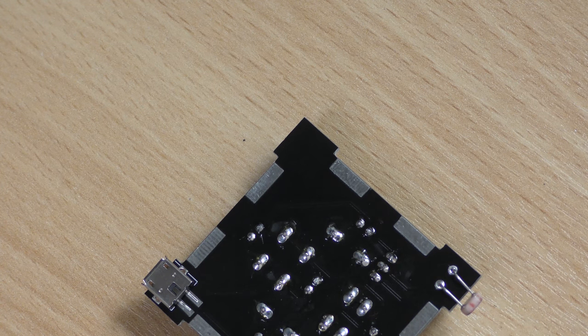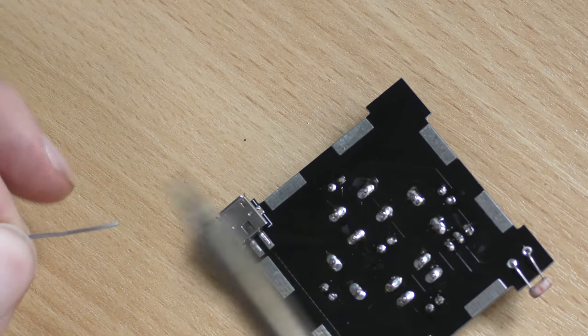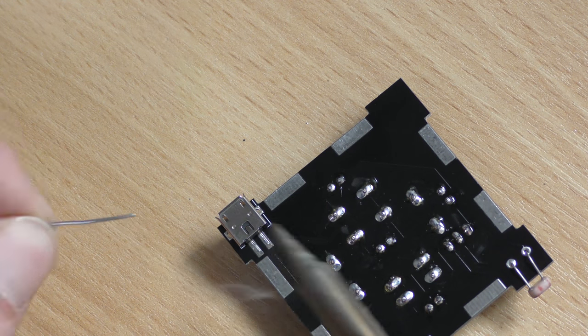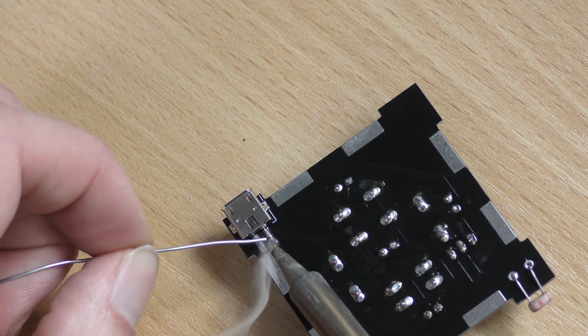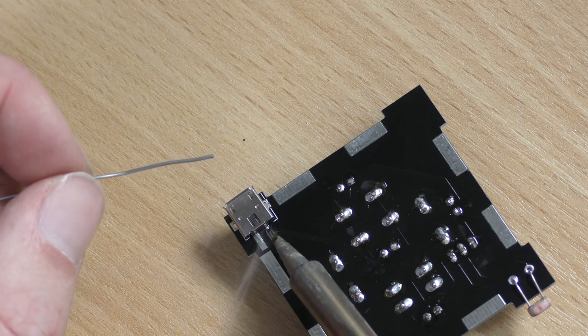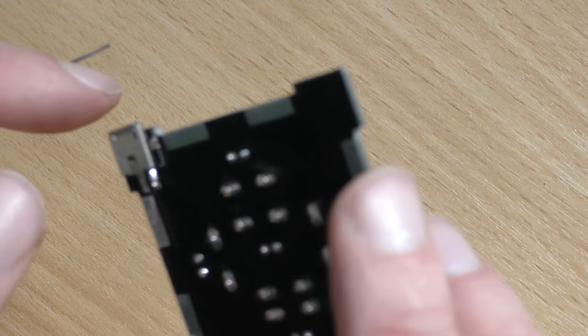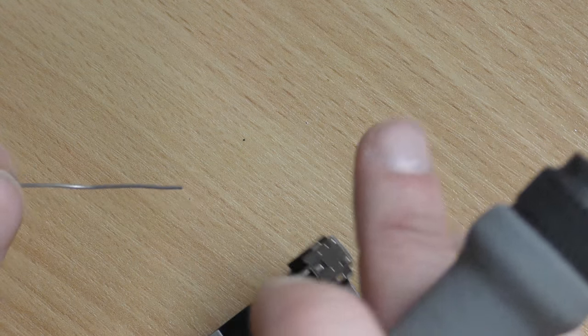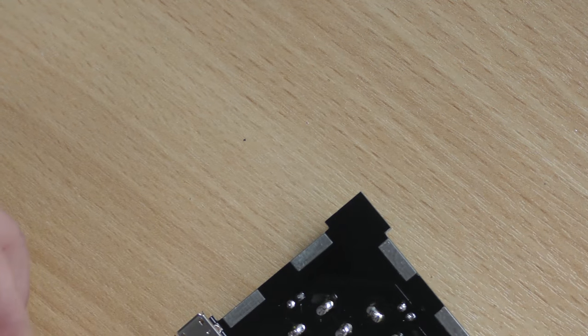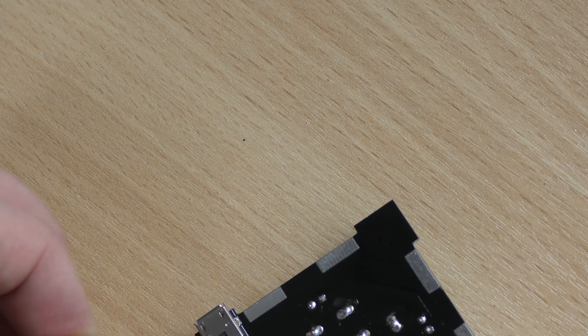So what you want to do, again, get your iron, tin it. You want to do one leg, just sort of, so one leg holds. And then make sure it's nice and straight.